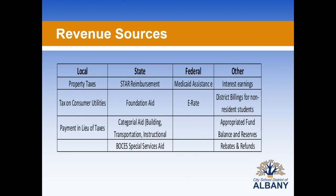Our revenue comes in four areas: local revenue, primarily comprised of property taxes but also including taxes on consumer utilities and payment in lieu of taxes. Our state aid comes as STAR reimbursement, Foundation Aid, categorical aid, and BOCES special services aid. Federal aid comes via Medicaid assistance and E-rate. And our other category includes interest earnings, billings for non-resident students, tuition and use, appropriated fund balance and reserves, and rebates and refunds associated with our health insurance program.